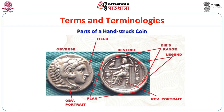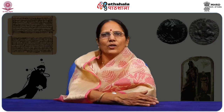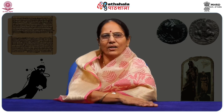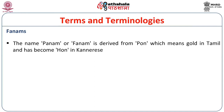In this slide you can find the parts of a hand-struck coin. On the upper side of the coin we can see the portrait of a king. On the reverse side you can see the planchet, deity, die range, and legend, and on the upper side you can see the field. These are all the parts of a hand-struck coin. So now you understand what is obverse, what is reverse, what is field, what is legend, what is planchet, and what is a portrait on both old and new coins.